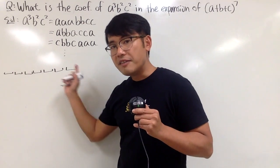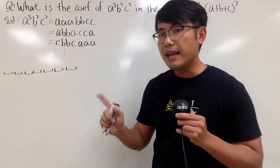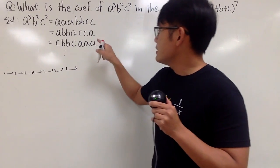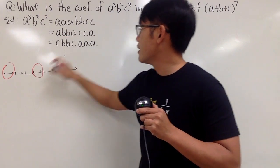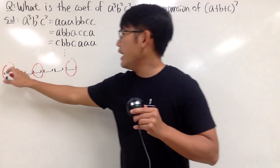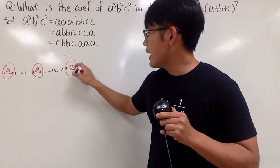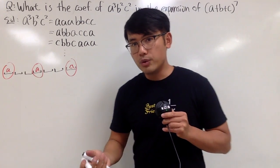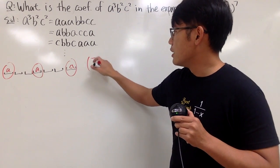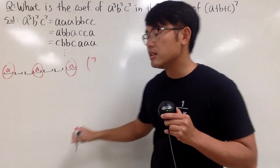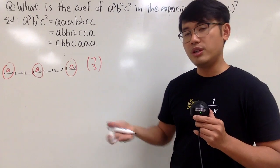Among the seven spots, you are going to choose three of them to be the A's. For example, we can choose this, this, and this for the A's. There were seven spots, and I have to choose three of them to be the A's — that's just seven choose three.